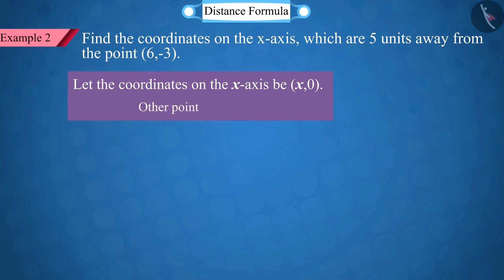Here, we are given another coordinate point (6, -3) whose first point is represented by x₁ and -3 by y₁. Similarly, the point on the x-axis is represented by x₂ and 0 by y₂.